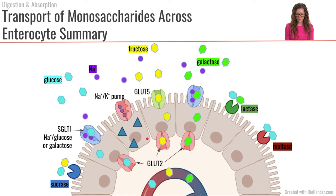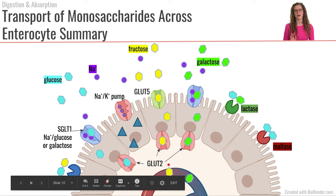GLUT2 operates via facilitated diffusion, with monosaccharides traveling down their concentration gradients. Once the monosaccharides have exited through GLUT2 on the basolateral side, the blood vessel is permeable to these monosaccharides, so they directly enter the blood vessel and continue on through the blood.